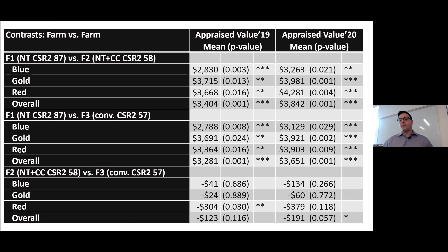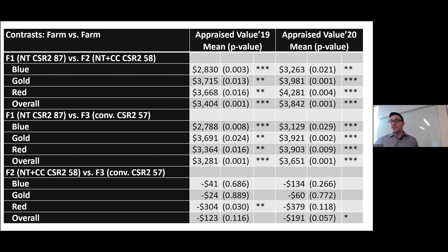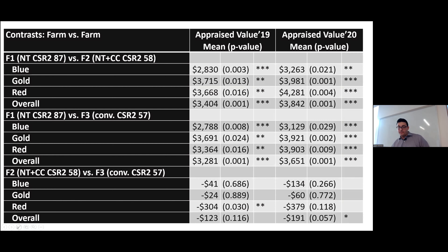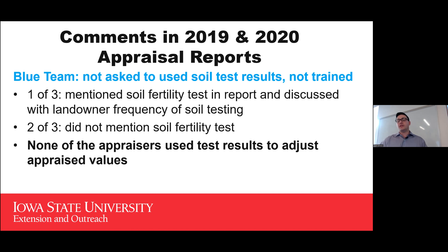Let's look at the values. Farm one is the long-term no-till farm. It's a larger farm of 105 acres and has a higher CSR2 — a higher corn suitability rating — than the other two, so it's more productive. That is reflected in higher values in both years. The mean difference across years — pre and post training — shows a minimal but statistically significant difference of about $500, although too many things were happening at that time including COVID.